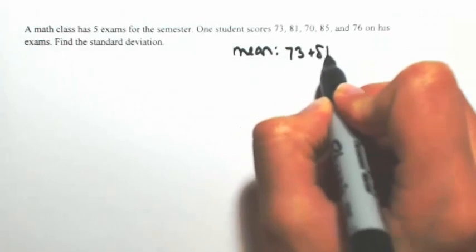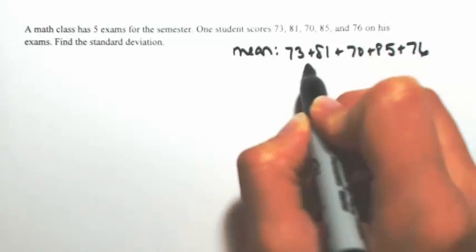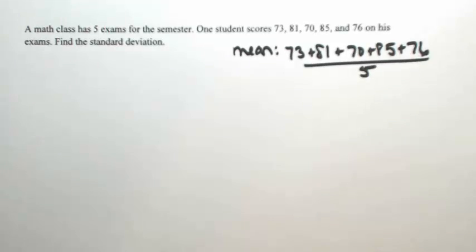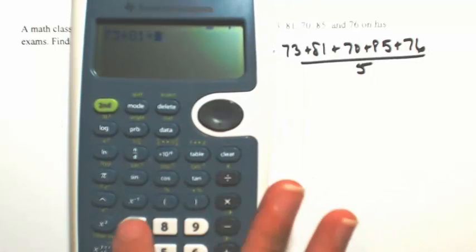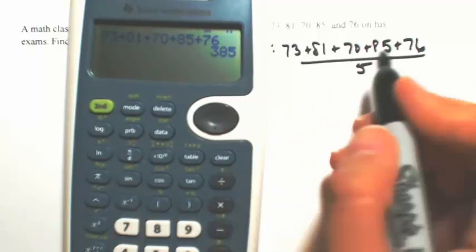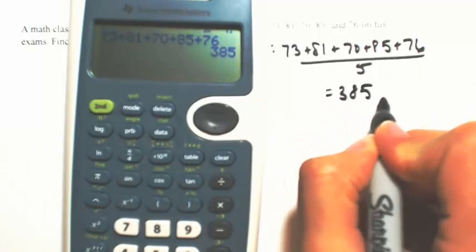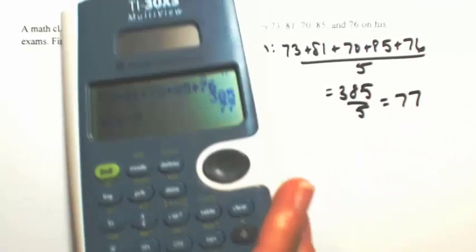So 73 plus 81 plus 70 plus 85 plus 76 divided by five. So we get 385 divided by five. So he averages about 77 on his test.